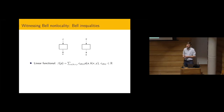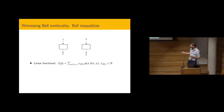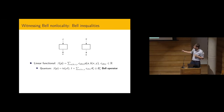The way to witness this strict inclusion is through Bell inequalities, which are linear functionals on correlations. I define a Bell functional beta with real coefficients as a linear combination of probabilities. Quantumly, the value is given by the trace of the shared state with a Bell operator. Once you take the trace with the state, you get the quantum value.